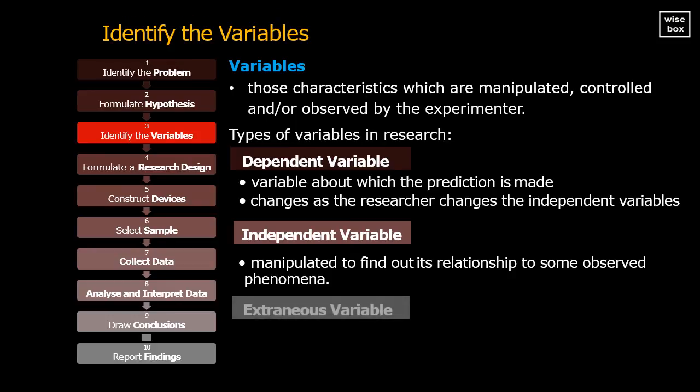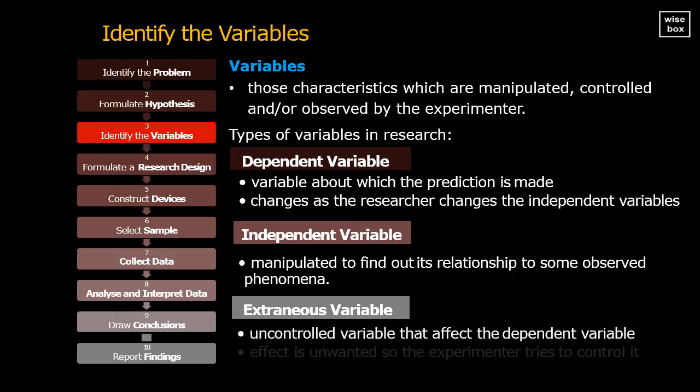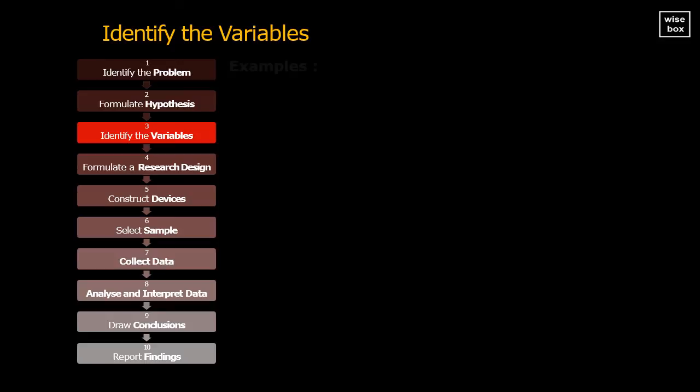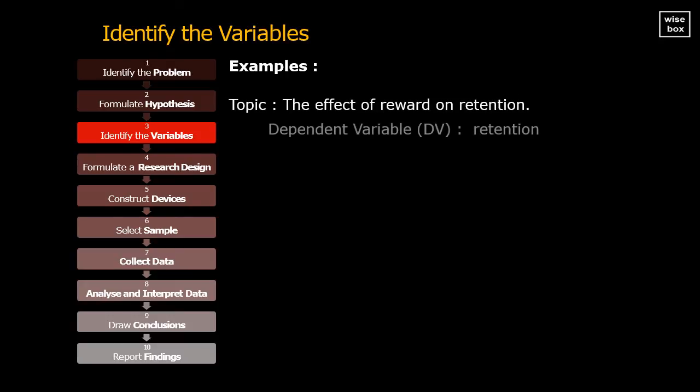Extraneous variable: An uncontrolled variable that may affect the dependent variable. This effect is unwanted, so the experimenter tries to control it as far as practicable. Let's have some examples. From the research topic, the effect of reward on retention: The dependent variable, or DV, is retention. While the independent variable, or IV, is reward.